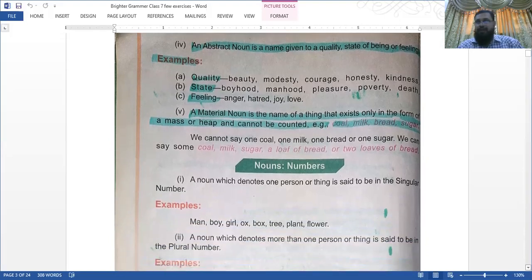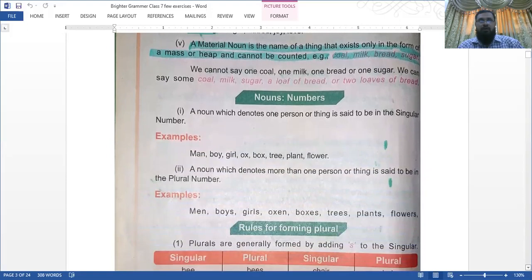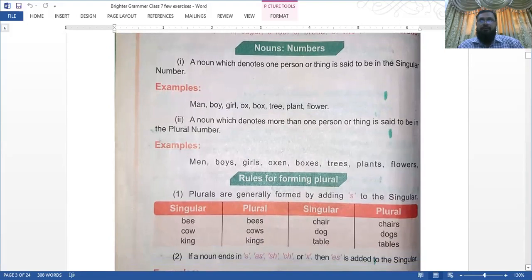You can listen to the video again and again if you feel any confusion. You can also read from the screen that is taken from the book. This is page number two, and we have done page number one. Numbers: a noun which denotes one person or thing is said to be singular. Plural: men, boys, girls, oxen, boxes, trees, plants.